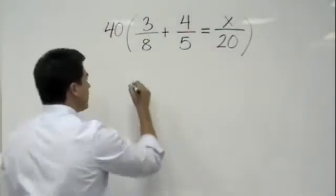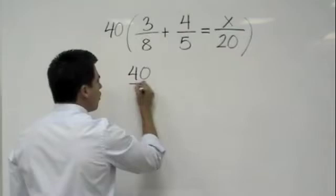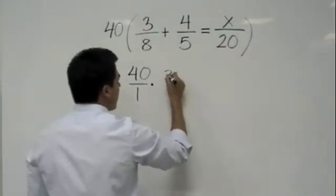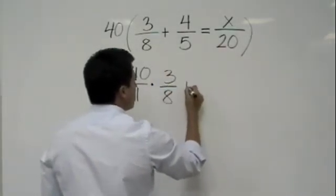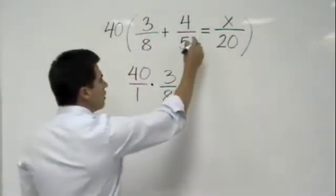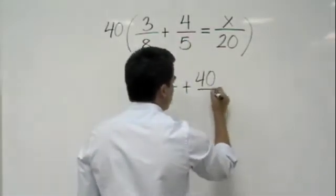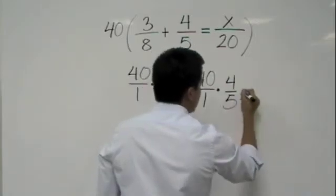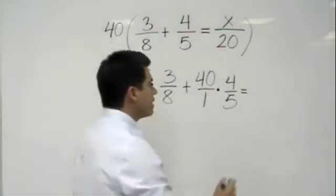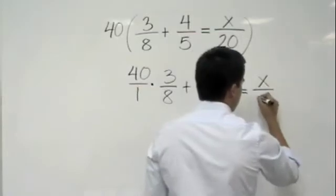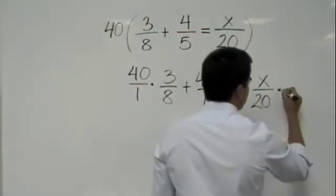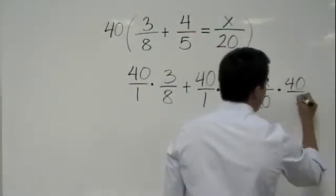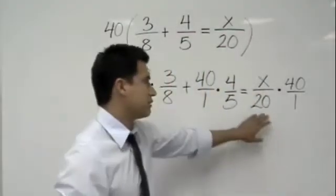So what I do here is I'm going to multiply everything by 40. So, it would look like this. It would be 40 over 1 times 3 over 8 plus 40 over 1 times 4 over 5. And that equals x over 20 times 40 over 1. Or you can do 40 over 1 times x over 20.